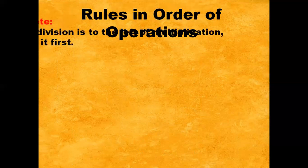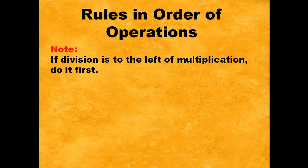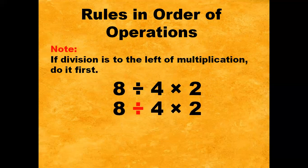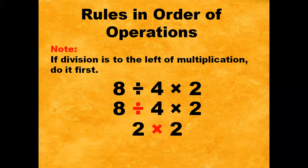So, what are the rules in order of operations? Note: if division is to the left of multiplication, do it first. For example, 8 divided by 4 times 2. First, we are going to divide 8 and 4, so 8 divided by 4 gives us 2 times 2. Then 2 times 2 gives us 4. So the answer for this expression is 4.